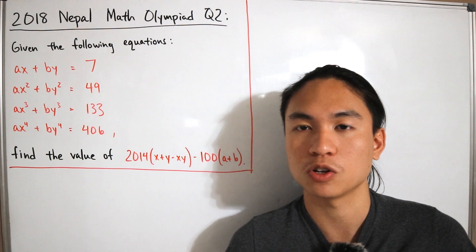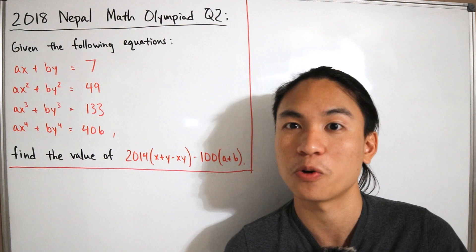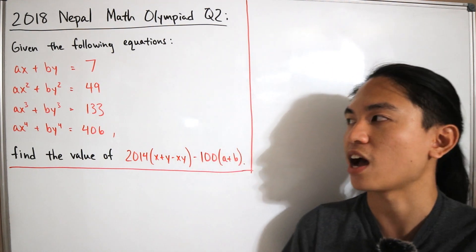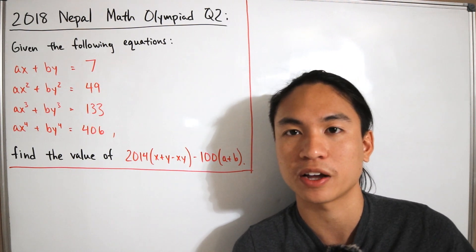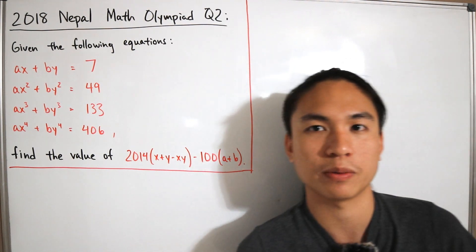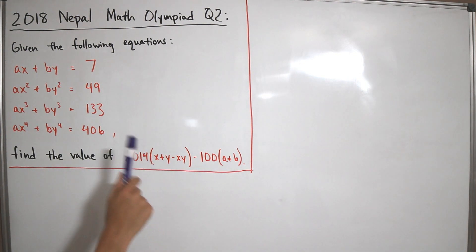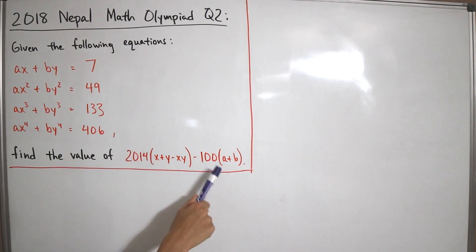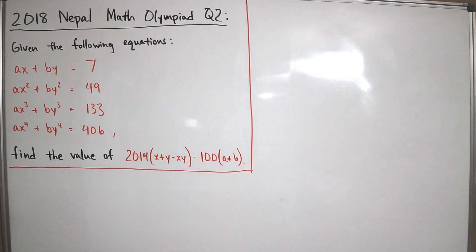This is a Math Olympiad problem, so you have to think outside the box — not just applying standard algebra, but finding a creative detour. With that, let's jump right in. Our goals are to find x + y, x times y, and a + b, then plug those back in for the final answer.